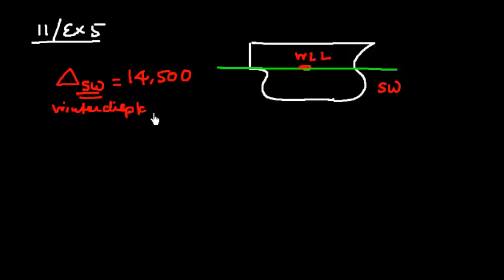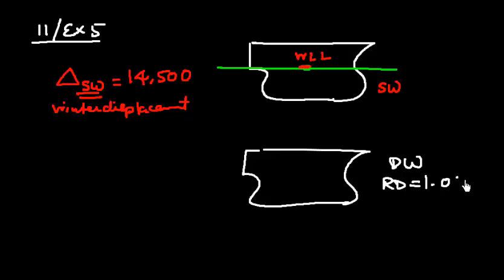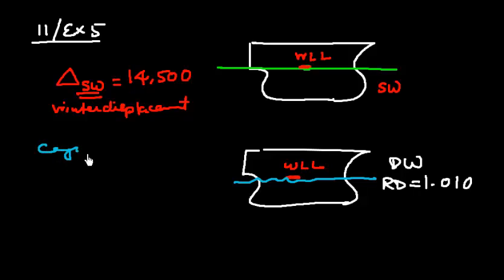The vessel can load up to the winter load line in salt water in winter season. Now if she is in dock water of RD 1.010, the vessel is in dock water with relative density 1.010, with her winter load line (WLL) — she is loaded up to there. We need to find how much cargo she can load.